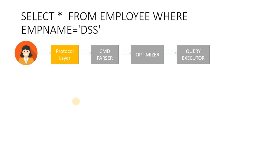During execution, we go to Access Methods. In the Access Method layer, we check whether the data is in the buffer cache. If the data is found in the buffer cache — in memory — we use soft parsing. If the data is not in memory, we go to the hard disk. If there is a transaction, we will also have a log file involved. This is the Access Method.